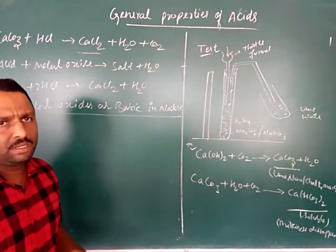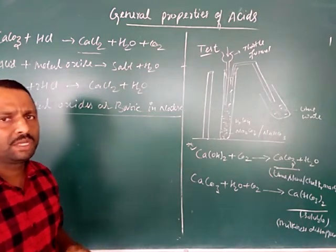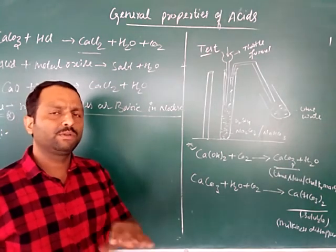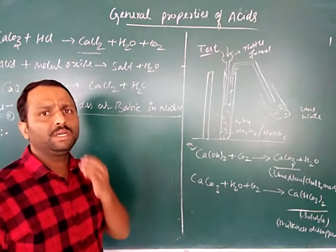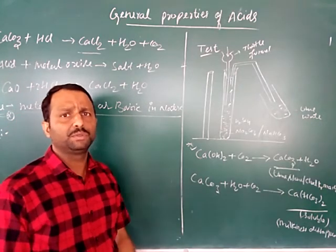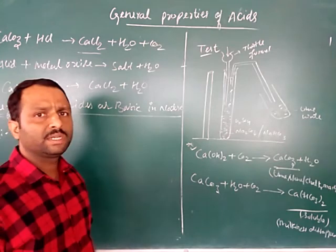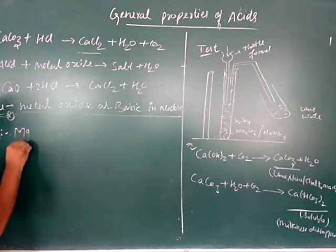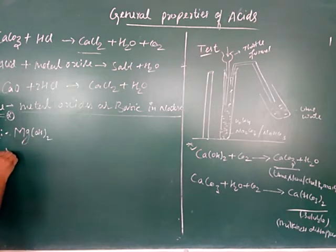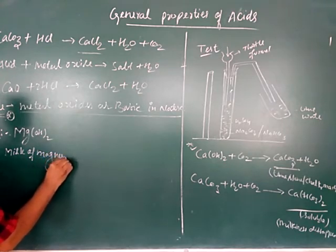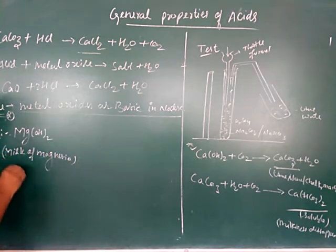Sometimes what happens is that the stomach releases hydrochloric acid — because if microorganisms enter with food, acid is needed. Milk of magnesia is an example of an antacid used to neutralize excess stomach acid.